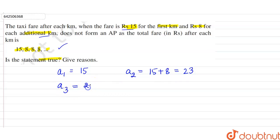Similarly, the fare for the third kilometer will be equal to the fare for the second kilometer plus Rs.8 for the next additional kilometer, so this is equal to 31. Similarly, the fare after the fourth kilometer is equal to 31 plus Rs.8, which is equal to Rs.39.